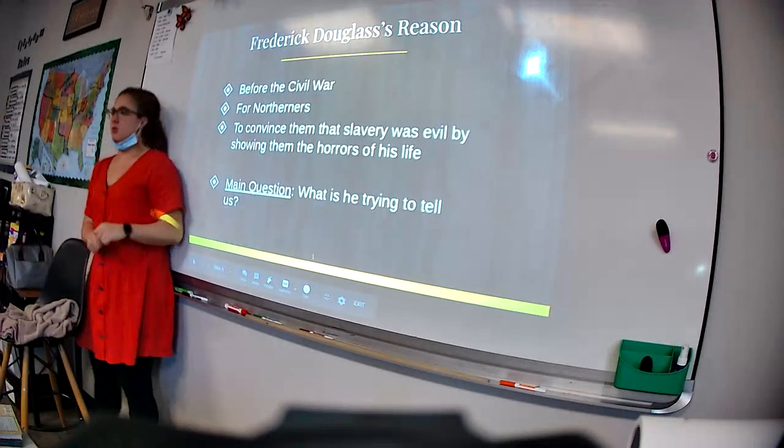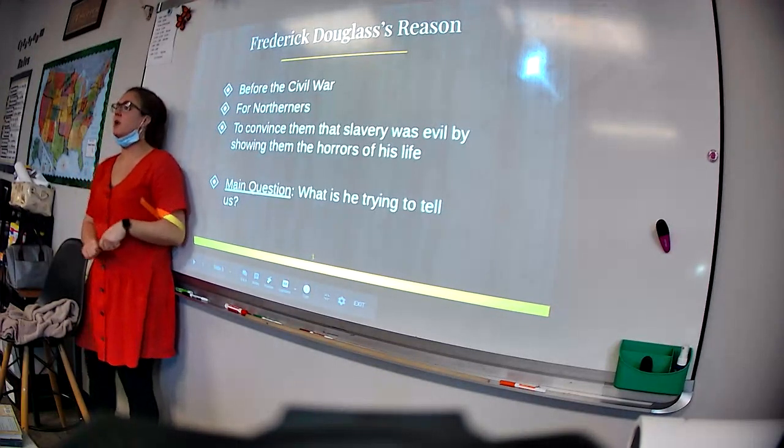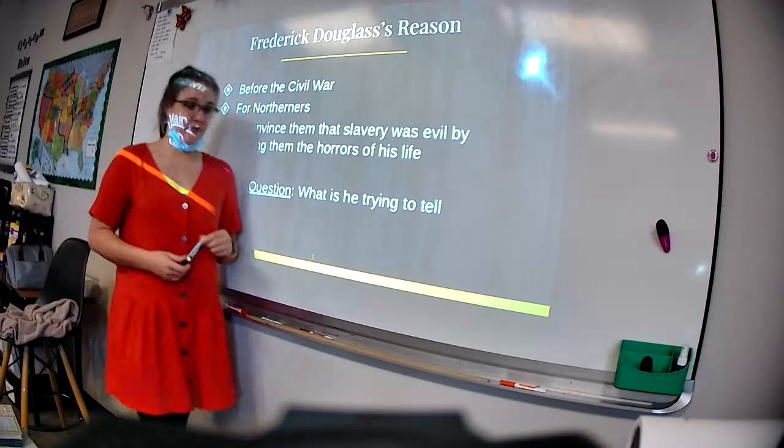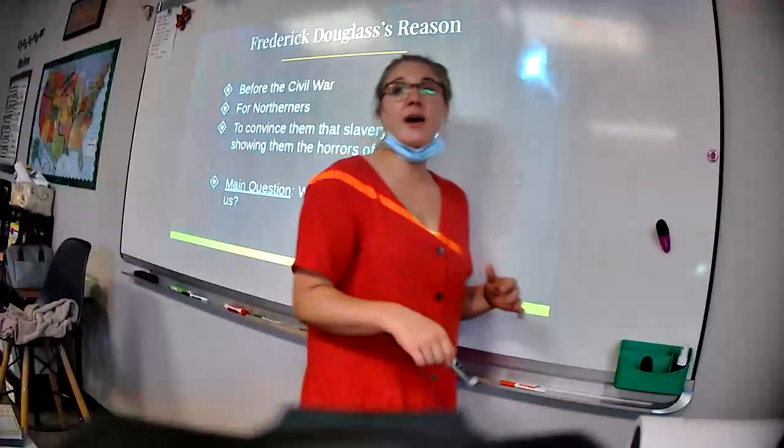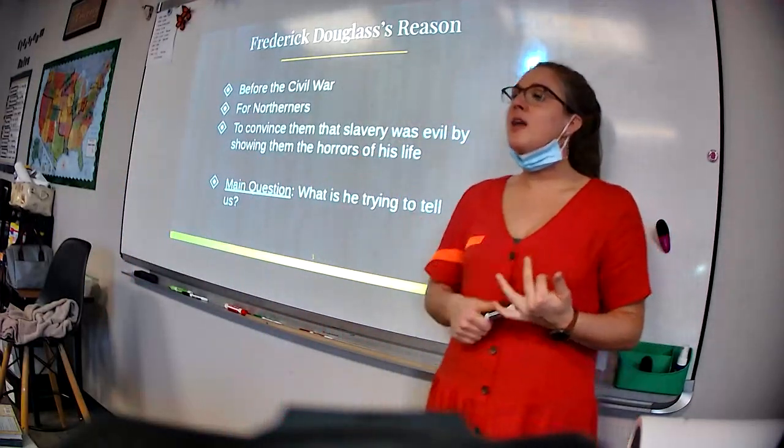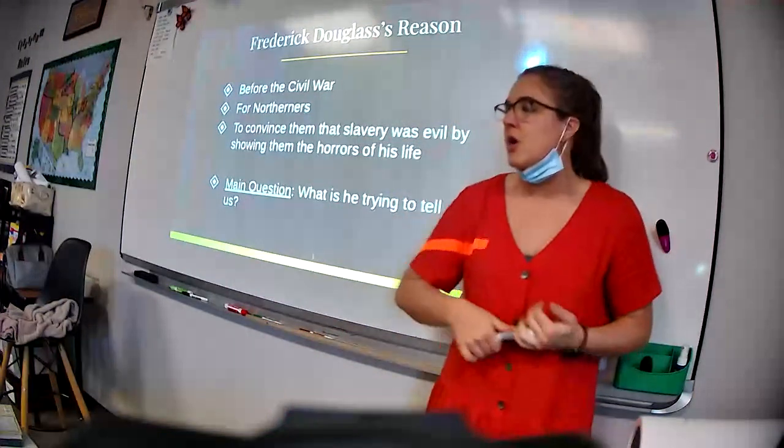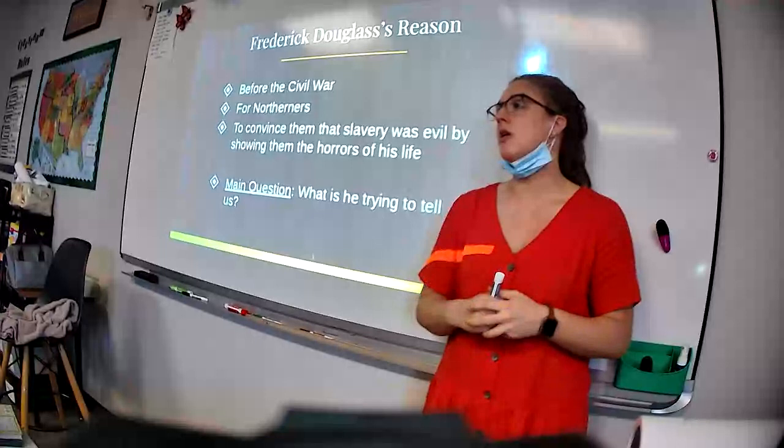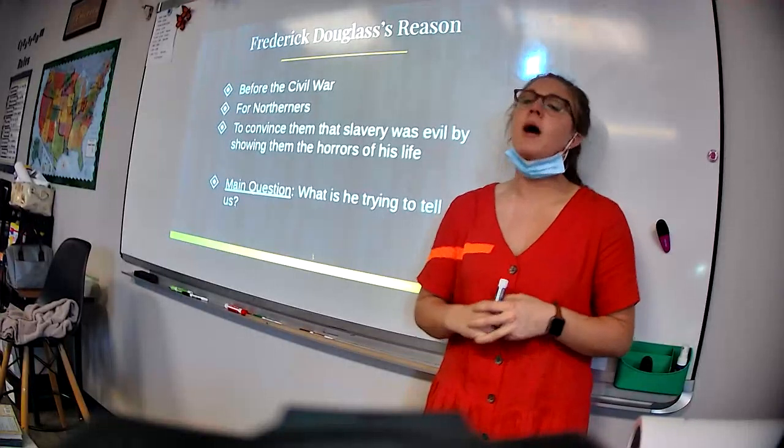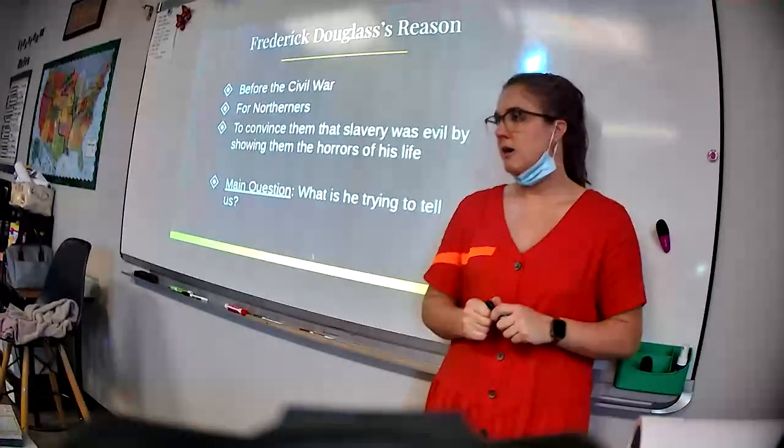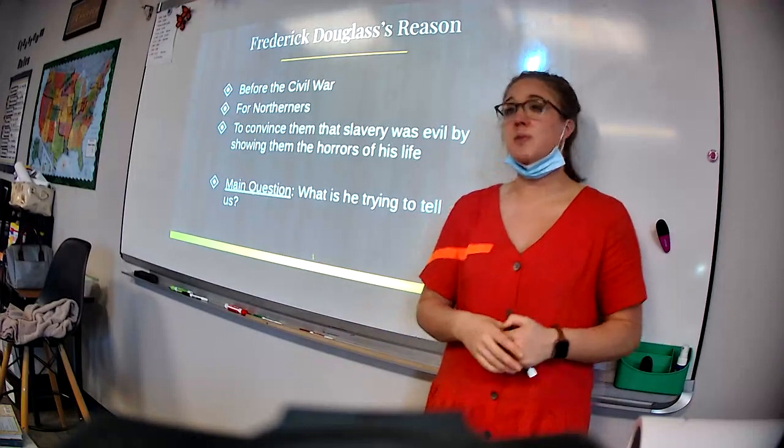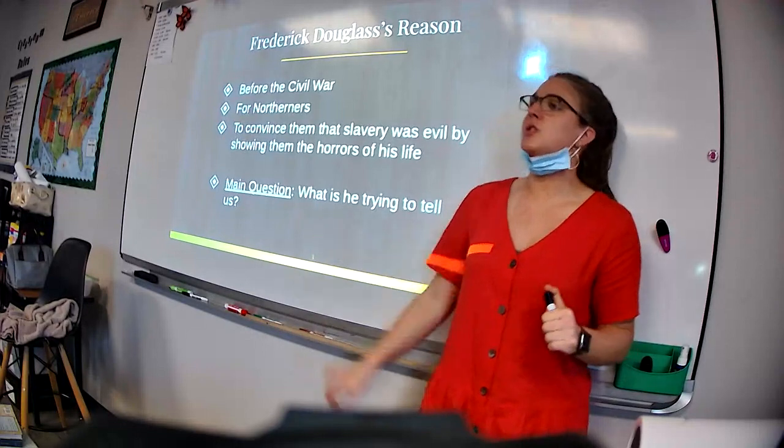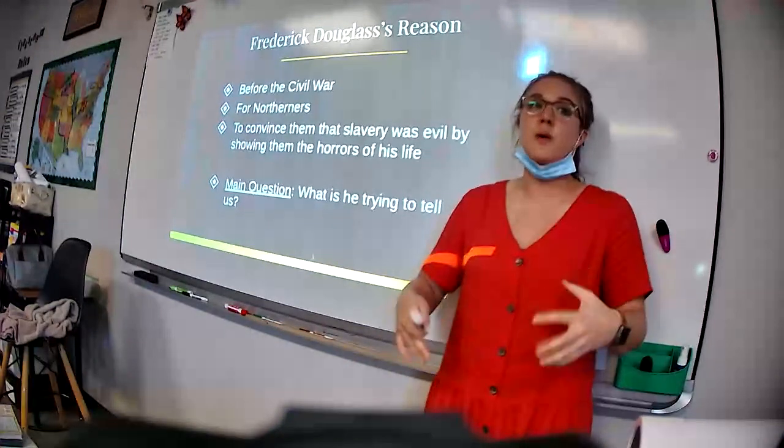The main question that we're going to be asking throughout this book, what is he trying to tell us? The book is rough. It is pretty graphic. It's pretty intense. But I want you to be thinking, what is he trying to tell us? Why is he explaining to me about Mr. Covey and how he was like a snake in the garden? And why is he telling me about how his mother only saw him a few times when he was a child? Why is he telling me that he doesn't know what his birthday is? Why is he telling me all these things? Keep asking yourself that question. Why is he telling me what he's telling me? Why is he including this part of the story?